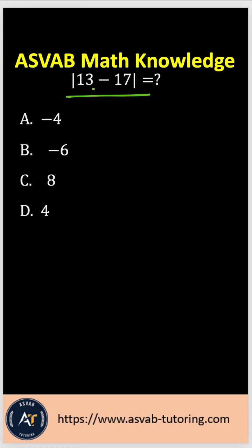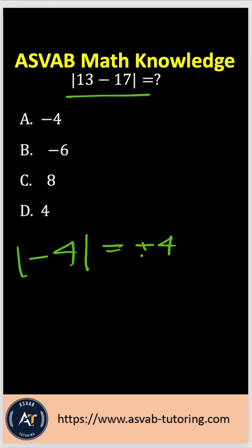In order to solve this, first you have to do the operation inside the absolute value, and then you have to simplify with the absolute value. So here we have 13 minus 17. When subtracting, you write the big number minus the small number. So 17 minus 13 gives you negative 4. And inside the absolute value, whatever sign you have — positive or negative — it will always be positive. That gives us the answer 4.